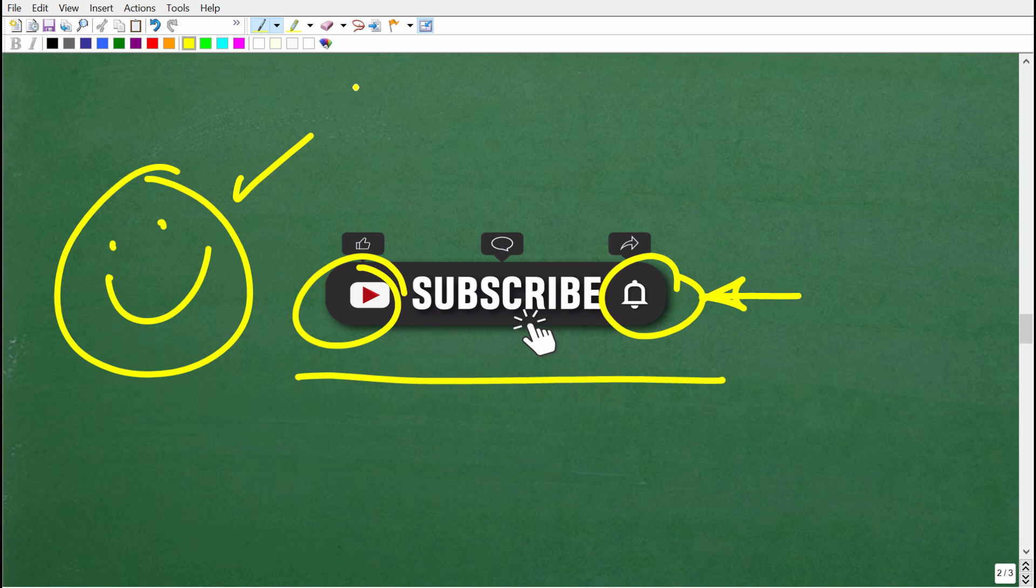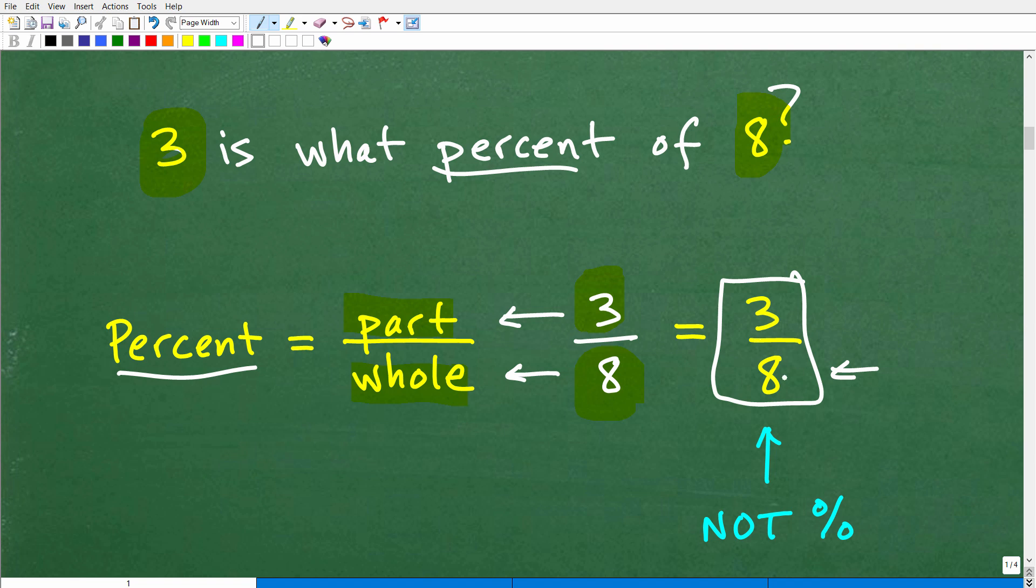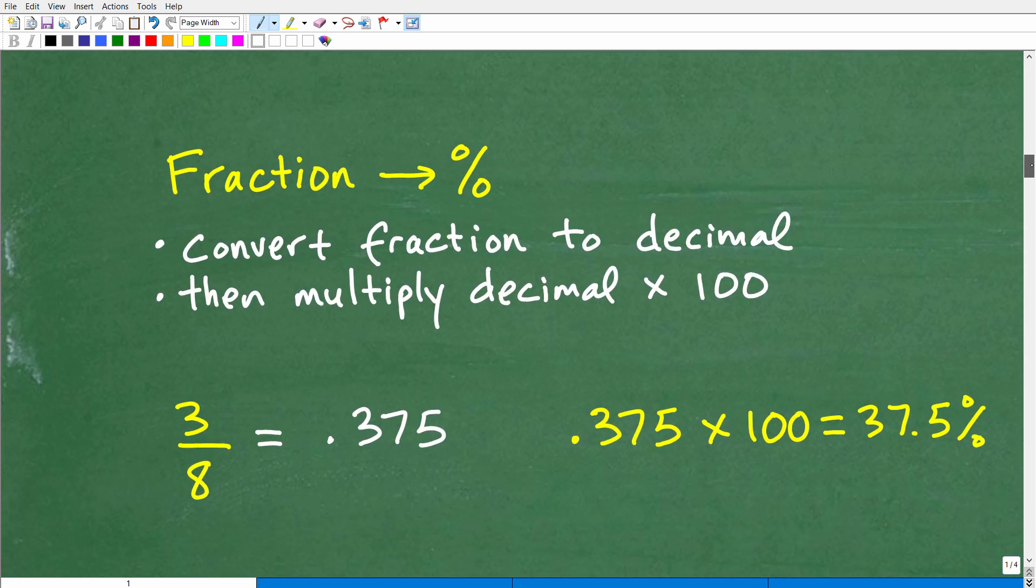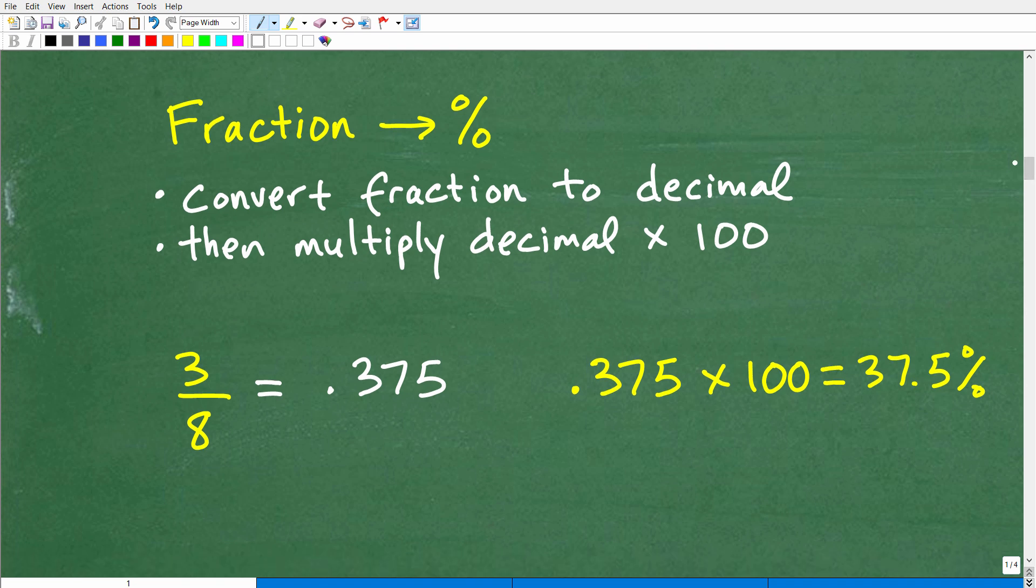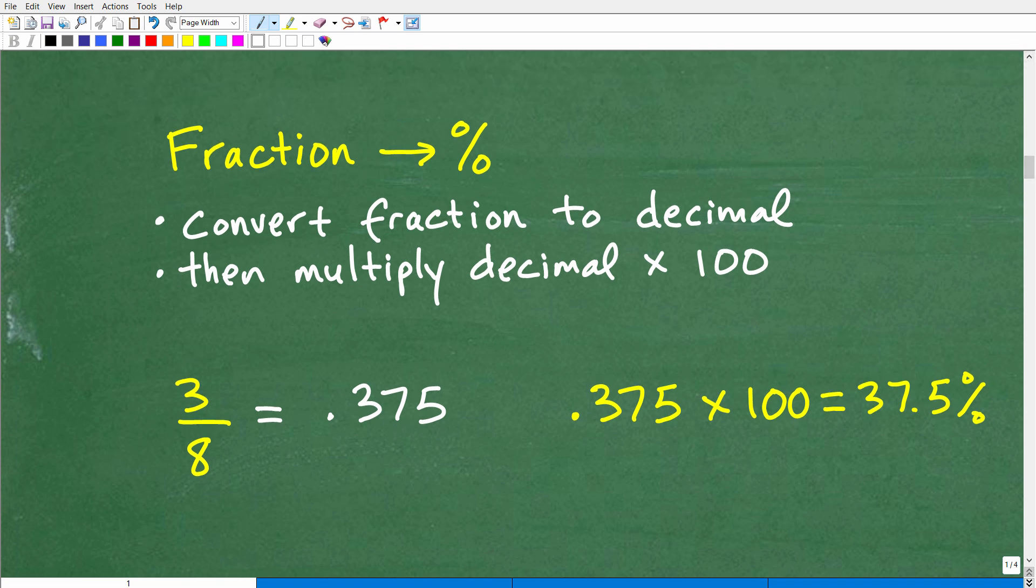Let's get back to the problem. Our answer is 3 over 8, but our answer is in fraction form, not percentage. We want to express a fraction as a percent. How do we express a fraction as a percentage? First, you want to convert that fraction to a decimal, and then we're going to take that decimal and multiply it by 100. Pretty simple arithmetic.